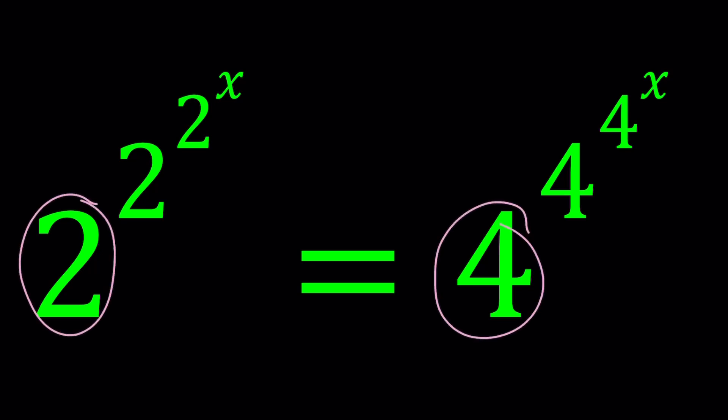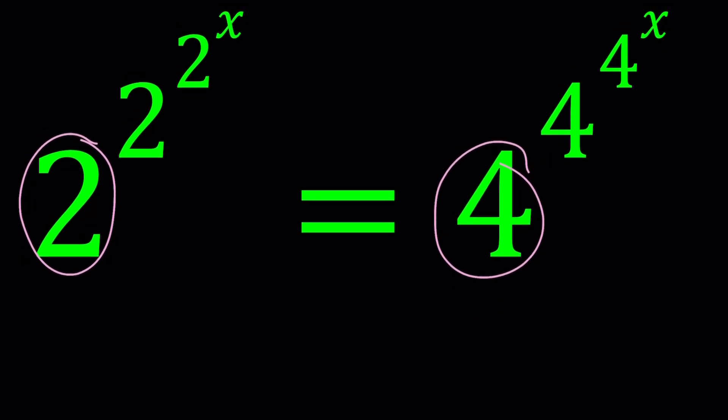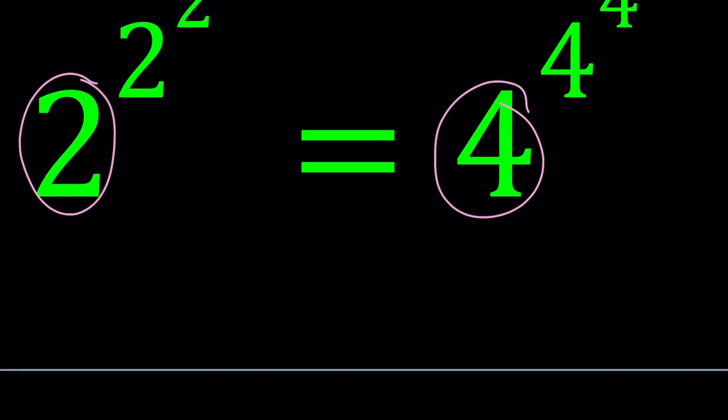If it wasn't, we could probably use logs to write it. But at this point, I can go ahead and write the 4 as 2 to the 2nd power and then raise it to 4 to the power 4 to the power x.